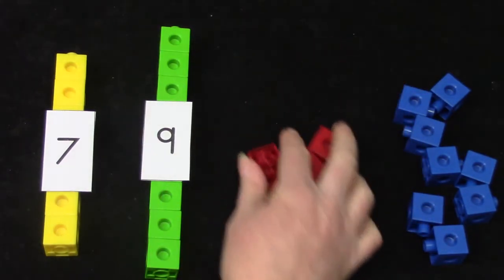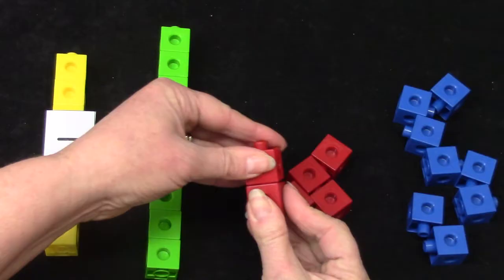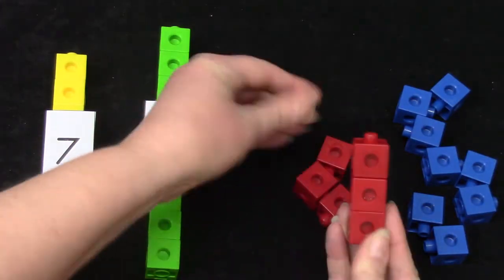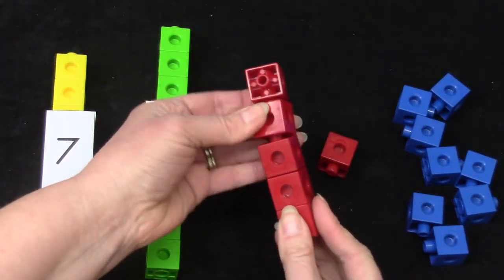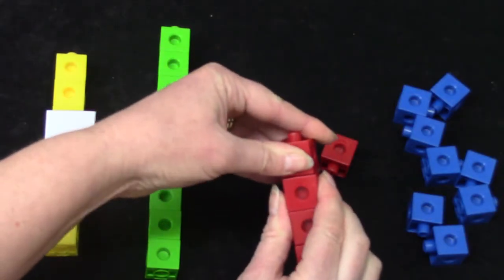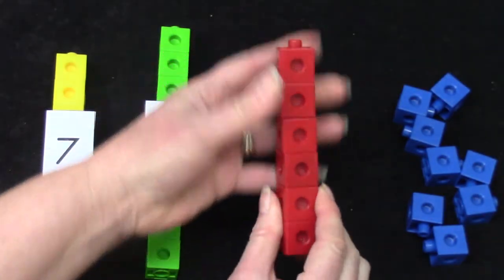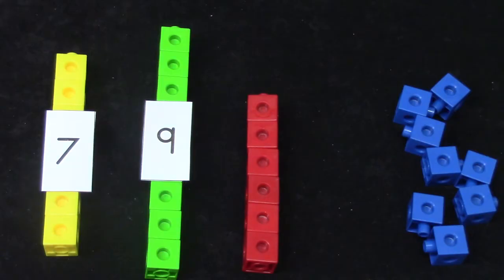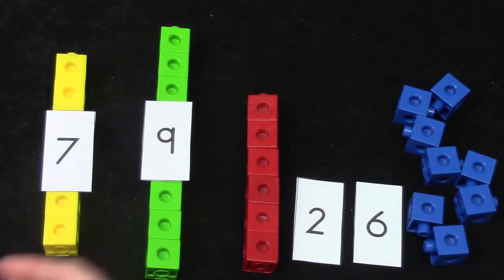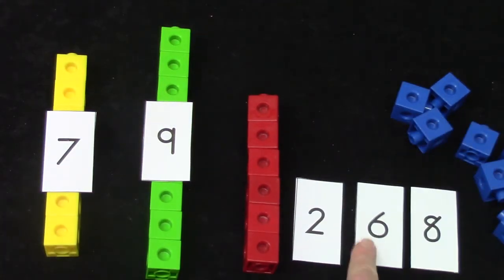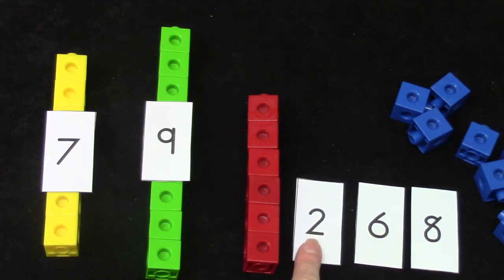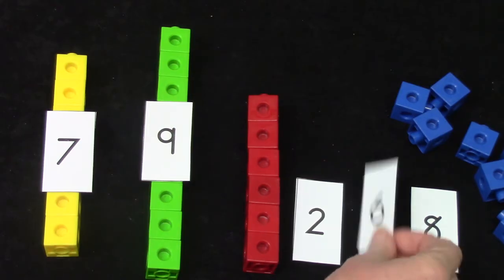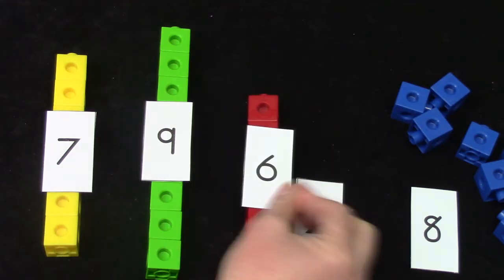Alright we have two more towers to build. Two, three, four, five, and one more. Six. I'm going to put out some numbers. I have three numbers here. Clap when I point to the right one. Did you clap for this one? That is the number six.